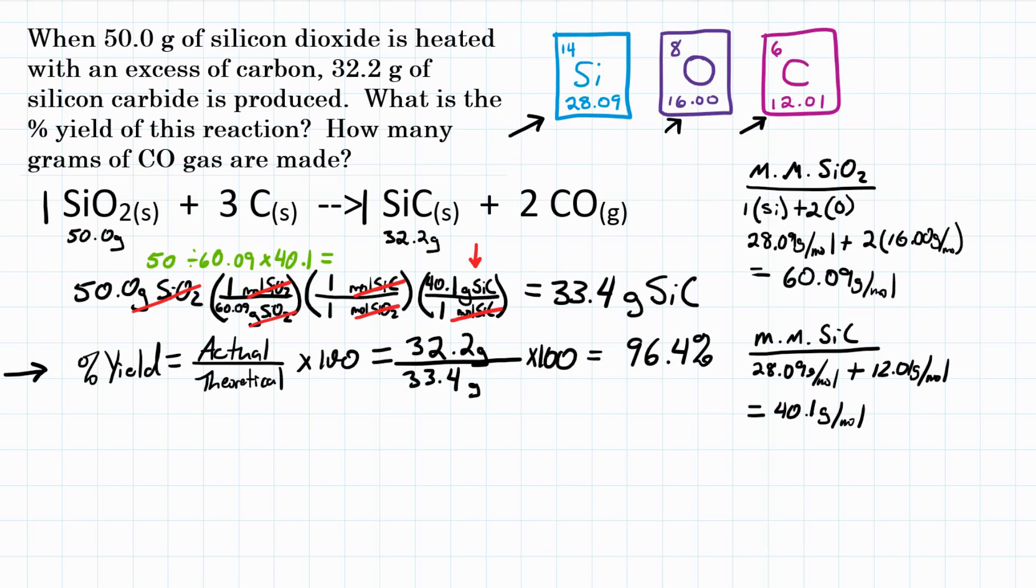So the second part of the problem says how many grams of CO gas are made. So because this is a percent yield problem, we're not actually getting 100 percent yield. We're not assuming that we're getting 100 percent. We need to use our experimental value. We need to use 32.2 grams of SiC because that's what we actually made. So we want to start with that and do another stoichiometry problem, three steps to get to grams of CO.